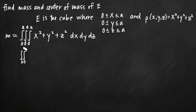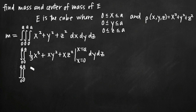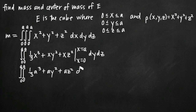Integrating with respect to x, we get 1/3 x cubed plus x y squared plus x z squared, treating y and z as constants. Evaluating on the interval x equals 0 to x equals a, plugging in a for x gives us 1/3 a cubed plus a y squared plus a z squared. Plugging in 0 gives 0 for each term, so we don't need to subtract anything. That's our simplified integral.